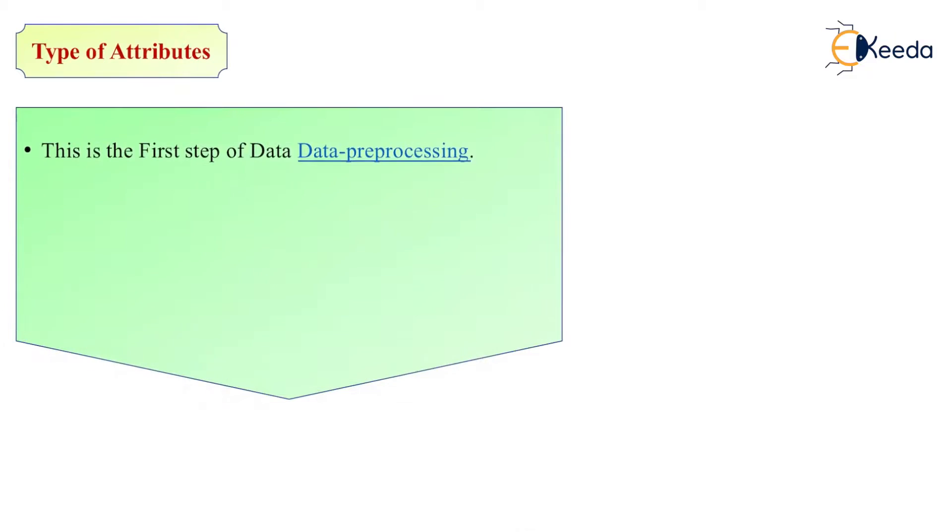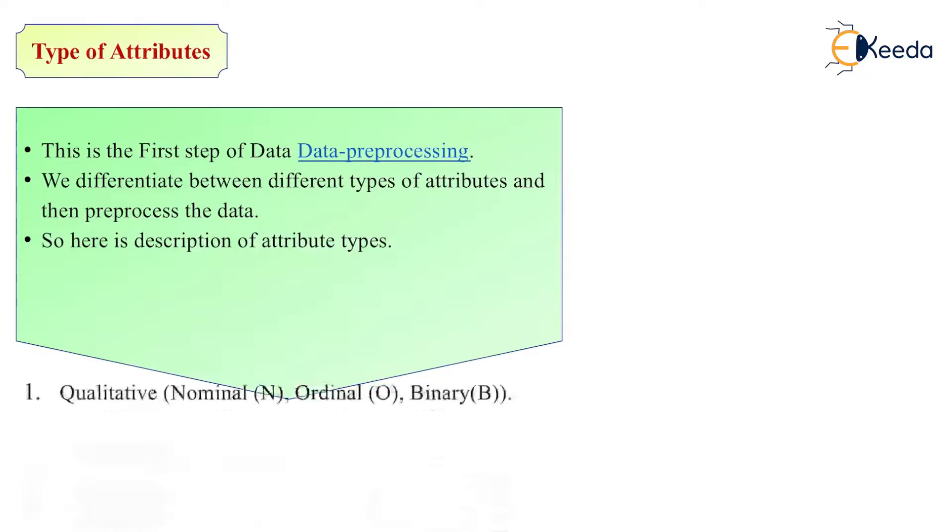Types of Attributes. Basically, this is the first step of performing data preprocessing. We can differentiate between the different types of attributes and then preprocess the data. So here is the description of attribute types.